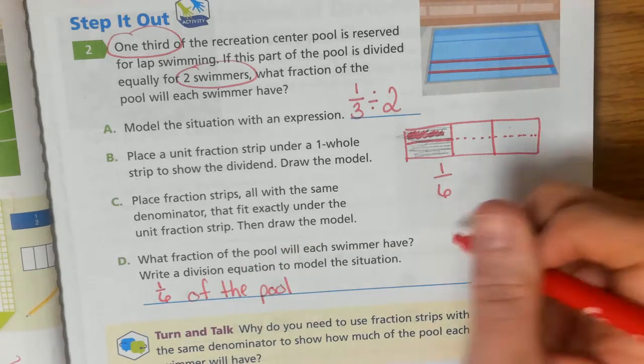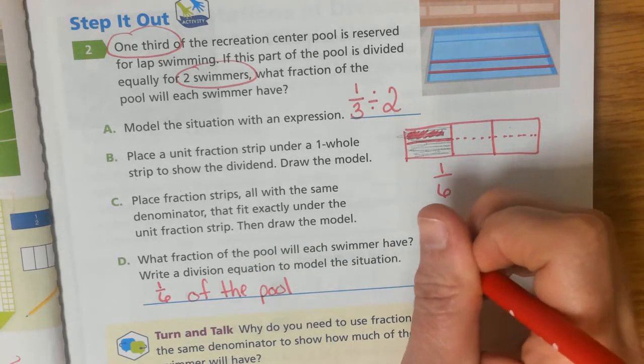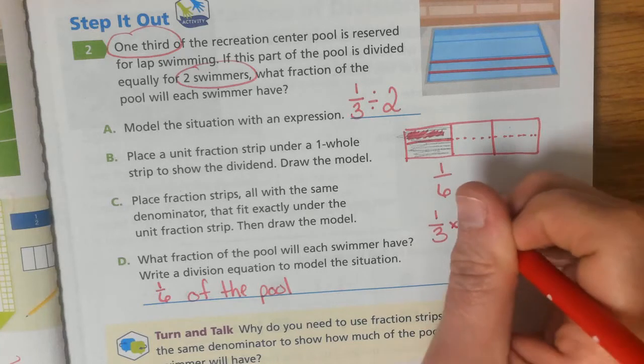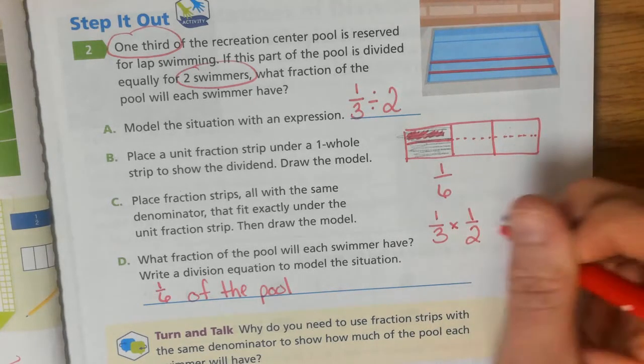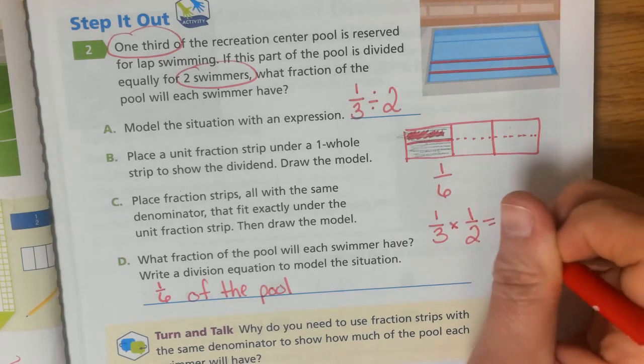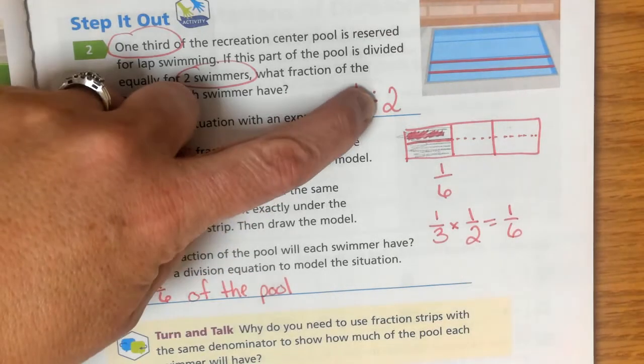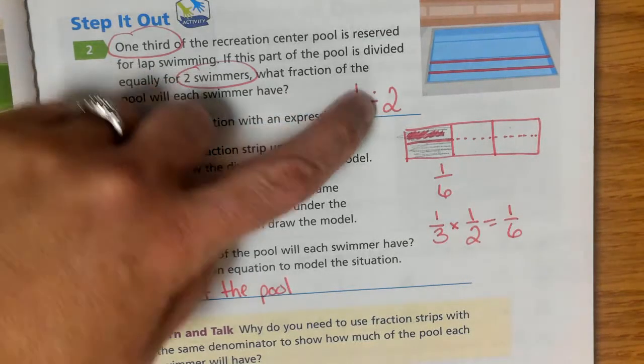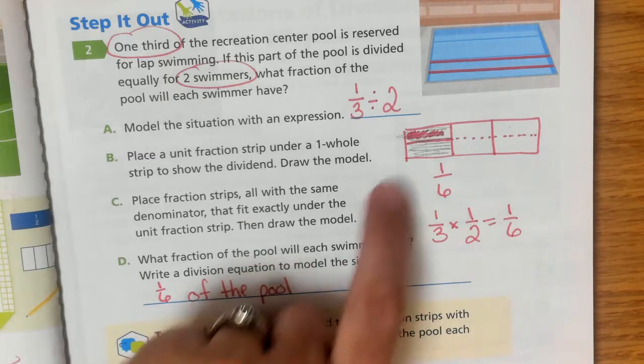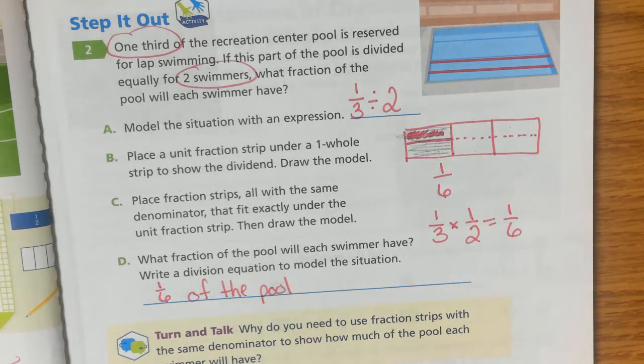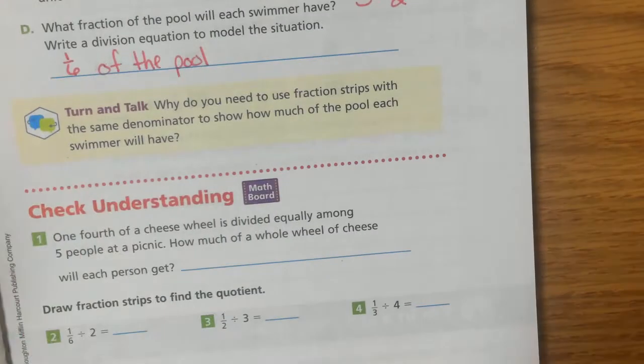Each person will get one sixth of the pool. The reason why this works is because we would do one third times one over two equals one sixth. We take the reverse. It's one over two. See how that works to give us our answer. Let's do some checking for understanding.